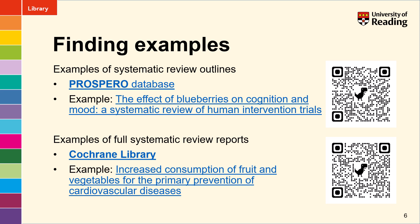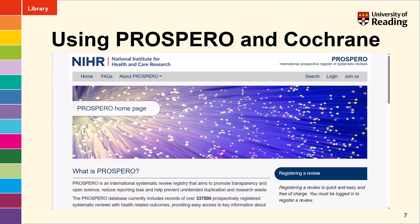If you're not sure what a systematic review is or how to draw up a protocol for a review, there are a couple of places you can look to find examples. The Prospero database gives systematic review outlines — an example I'll show you in a moment is on the effect of blueberries on cognition and mood. The Cochrane library gives you full write-ups of systematic reviews so you can see exactly what goes into writing a professional systematic review, how it is laid out, and how the appendices are used to record search strategy. Both Prospero and the Cochrane library are freely available and are linked from our systematic review guide.